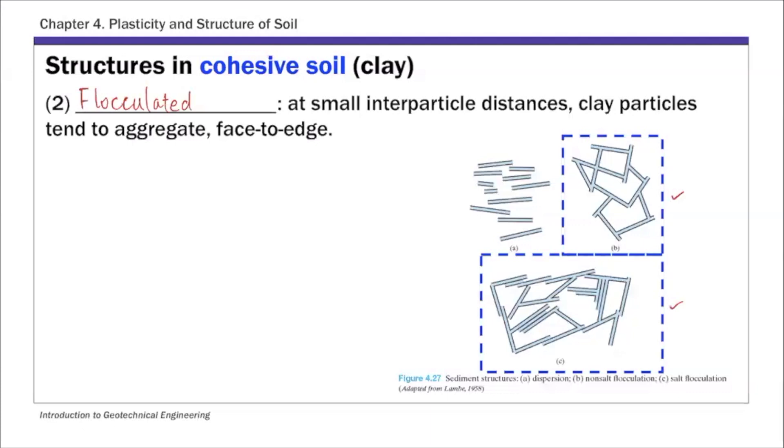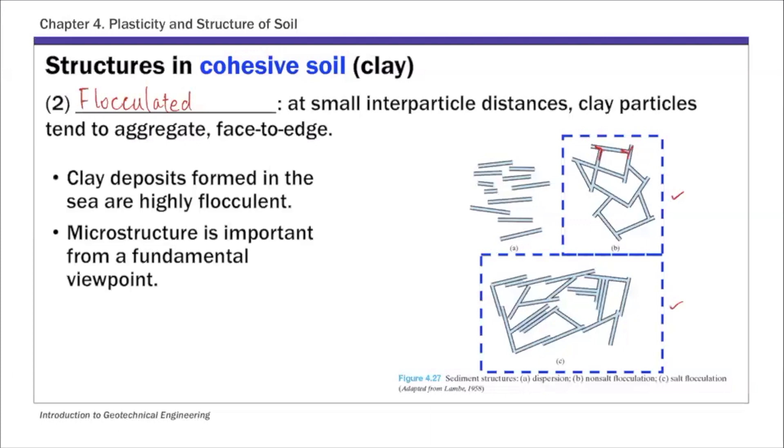In all these structures, flocculated structures, you have basically face-to-edge. So you can see all these face-to-edge connections because of the positive and negative charges. And clay minerals formed in sea are highly flocculent. For most natural clays, you will find a mix of both. So you'll find a mix of flocculated and dispersed structure. And all these microstructures are important from a fundamental point of view. They help us to understand why clay behaves in a certain way.